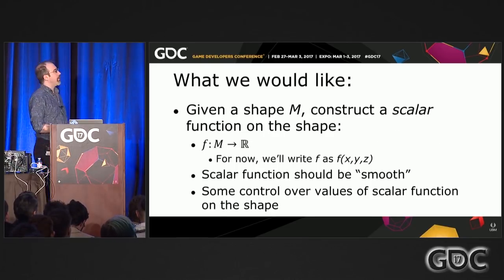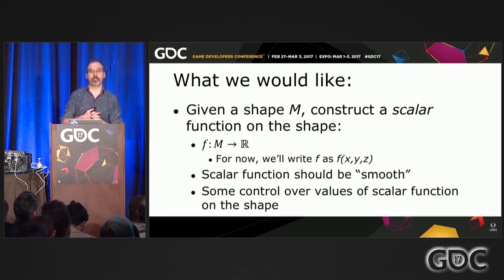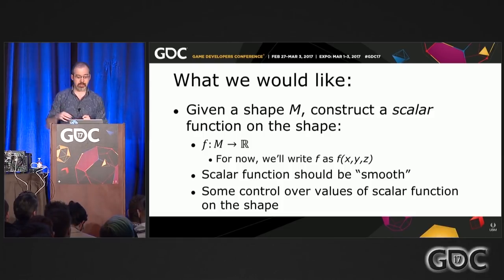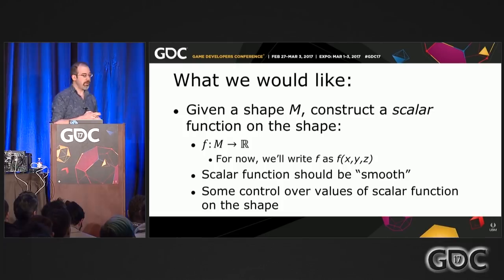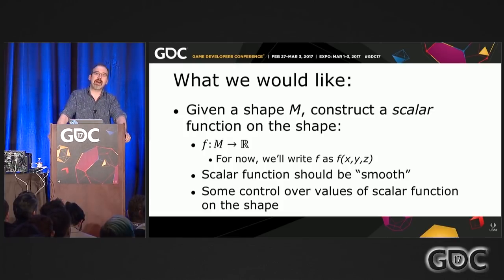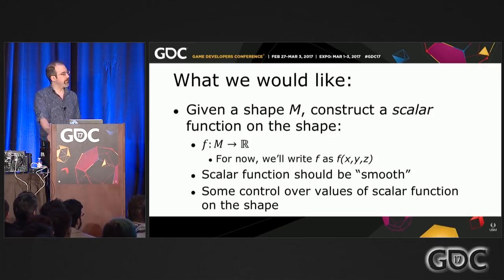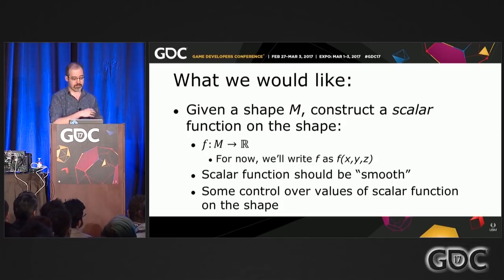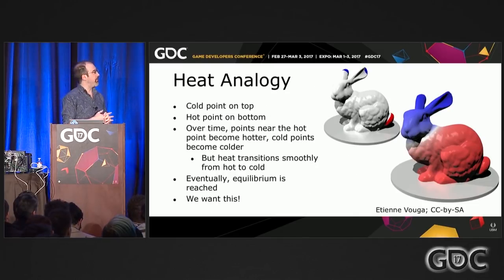So let's talk about what we would like. I give you a triangle mesh M, and I would like to put a scalar function — just a float, not a vector function — on the shape. I would like it to be smooth in an intuitive sense. At some points on my mesh I would like to have control over what the values of the function are — I define it in some places, and everywhere else I want it to blend smoothly across the mesh.